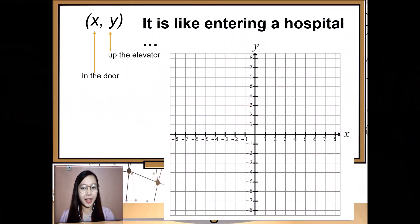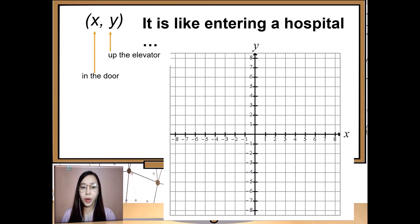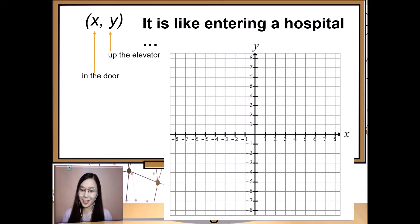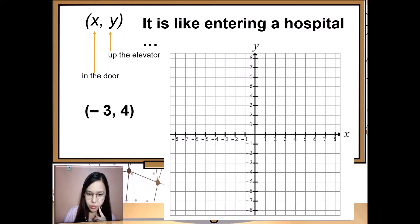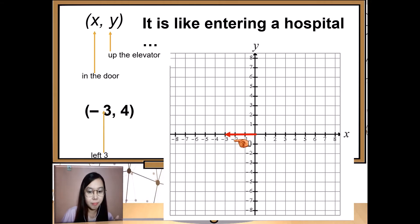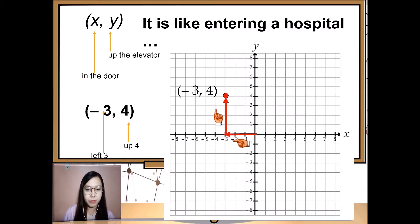Think of x and y like entering a hospital: x is the door — it moves side to side — and y is the elevator, because elevators move up and down. Now let's try the point (-3, 4). Negative three means we move to the left: one, two, three. Then going up four. So we have the point (-3, 4).